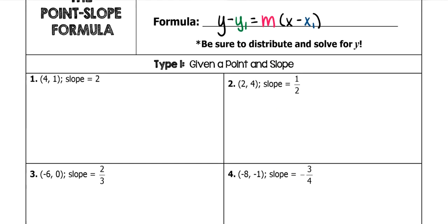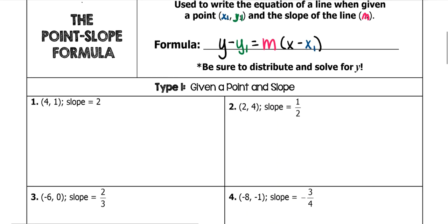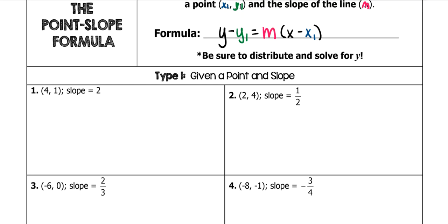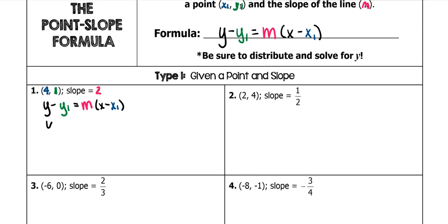We use point-slope form anytime we're given a point and a slope, which is what we have at number 1. So we just have to fill it in — we have our Y1, our X1, and our slope. Y minus Y1 is 1, my slope is 2, and X minus my X1 is 4. Now we need to solve this for Y.